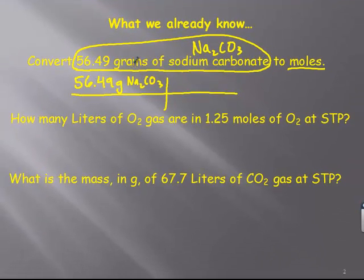So the first thing we would have to do there is know how to write the formula for sodium carbonate, and the reason we need that is we're starting in grams of sodium carbonate, and we're asked to find moles of sodium carbonate. So 56.49 grams of Na2CO3. So the way you want to start this is find the number, 56.49, the unit, grams, and what it is of, sodium carbonate.